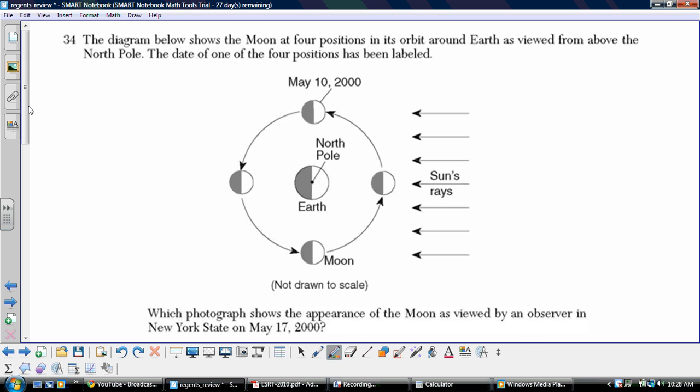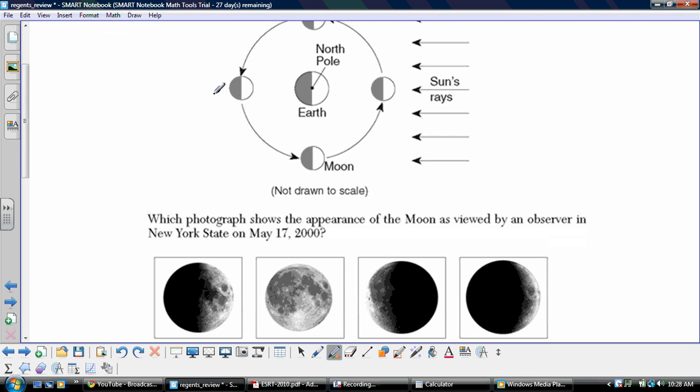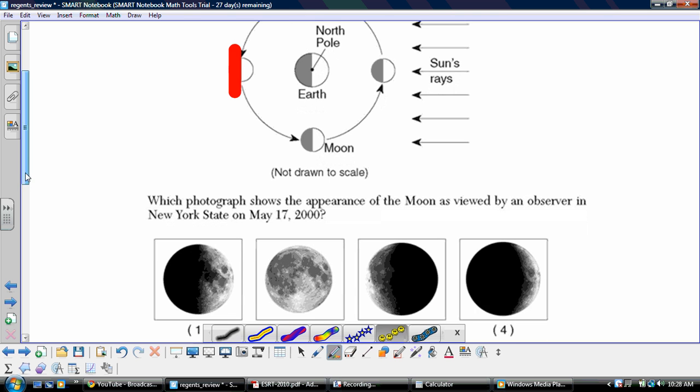Now, what we're asked in this question here is which photograph shows the appearance of the moon. So first we had to figure out that this was the position we need to look at. So coming from the Earth, looking at that position of the moon, keep in mind we are going to have our line of sight cut off as we've done in class. We're only going to see the half that's facing us. Here we've got 100% of that sunlit surface is facing the Earth, and so that would be the full moon here.